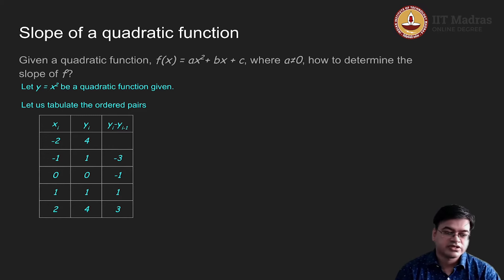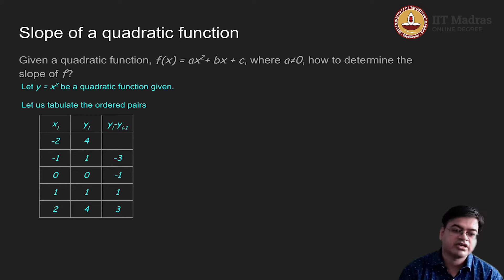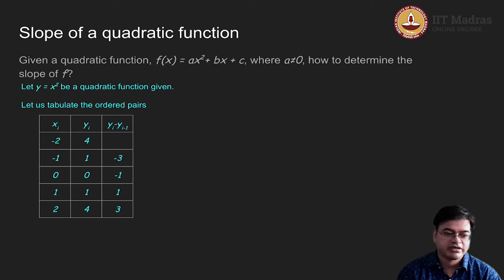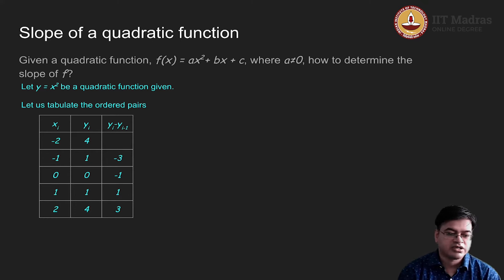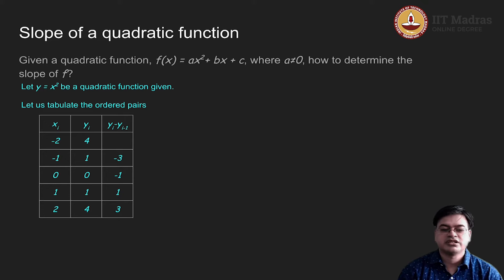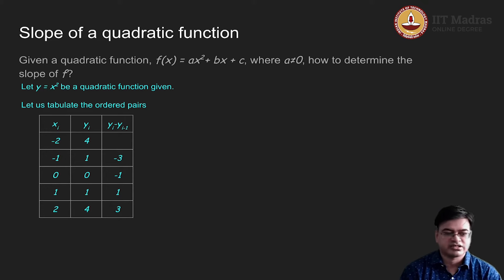I will use this notation and figure out the differences between y_i values. Because the denominator is always 1, it suffices to take those differences: 4 minus 1 is minus 3 (that is y_i minus y_{i-1}), 0 minus 1 is minus 1, 1 minus 0 is 1, 4 minus 1 is 3. So I got the changes in y with respect to 1 unit change in x — this is the slope.